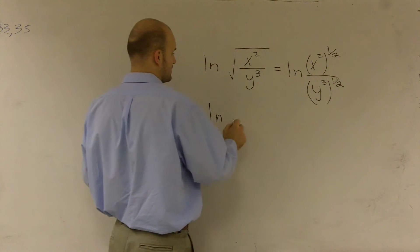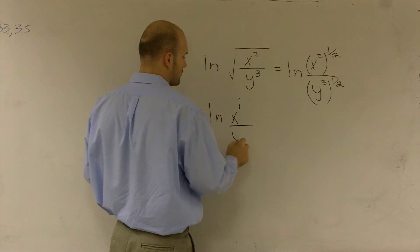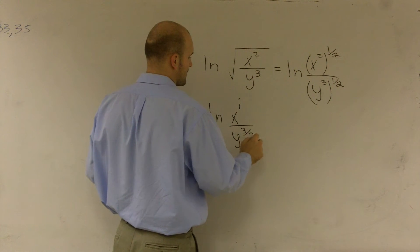So I have ln of x to the 2 divided by 2, which would be to the first power, over y to the 3/2.